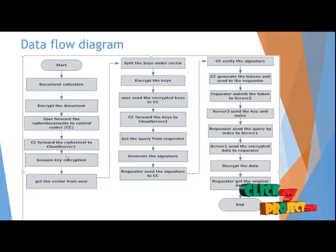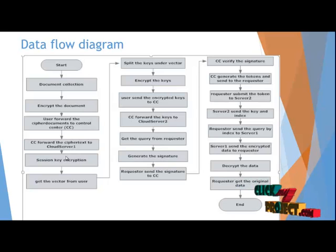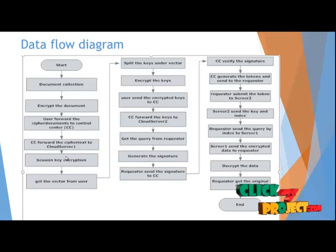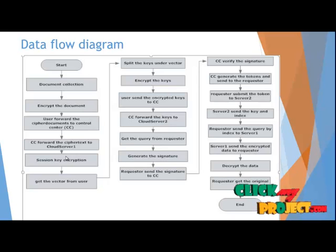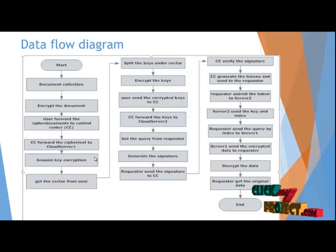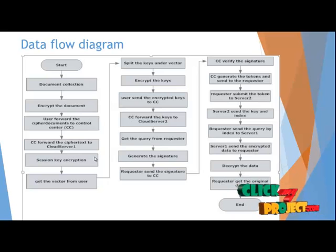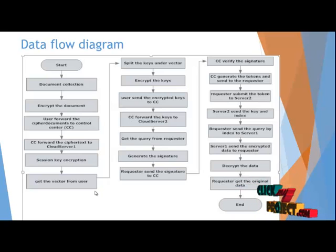Depending on the tokens, Server 2 sends the key and index. The Requestor receives the key and index, and sends the query to the Control Center by index. Server 1 sends the encrypted data to the Requestor. Finally, the Requestor decrypts the data using the key and gets the original data.